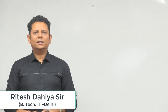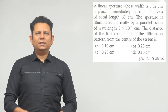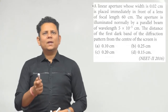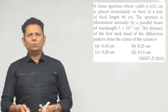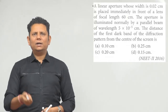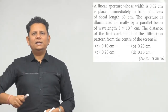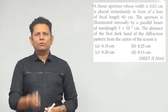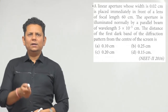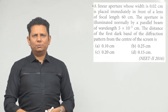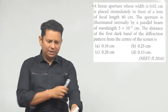A linear aperture whose width is 0.02 centimeter is placed immediately in front of a lens of focal length 60 centimeter. The aperture is illuminated normally by a parallel beam of wavelength 5×10⁻⁵ centimeter. The question asks for the distance of the first dark band of the diffraction pattern. Four options are given: 1.2, 1.5, 0.25, or 0.15 cm.